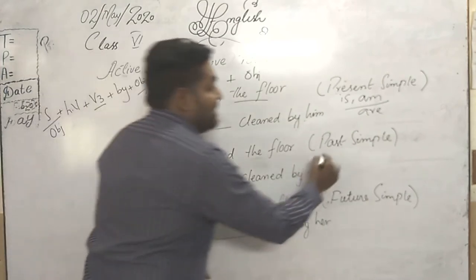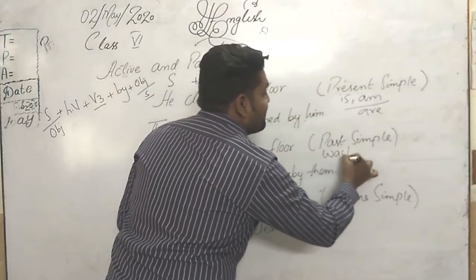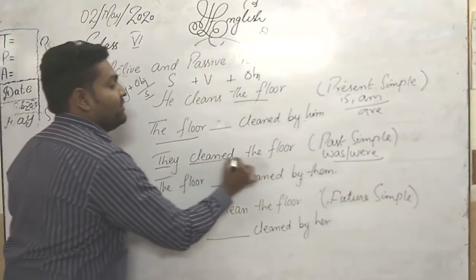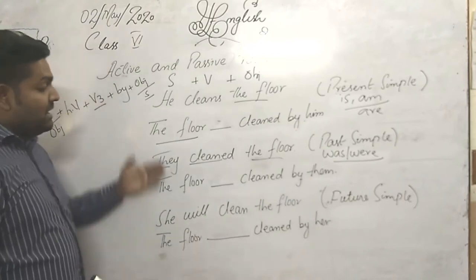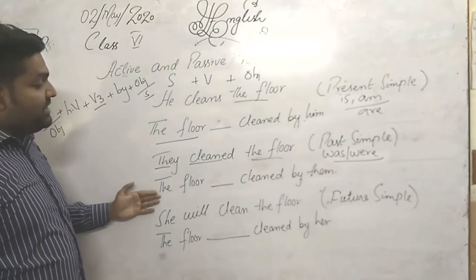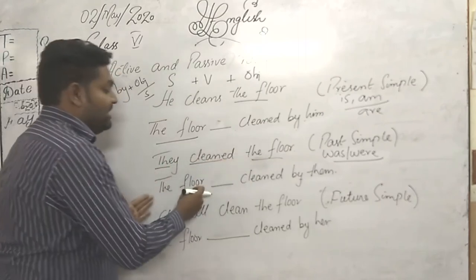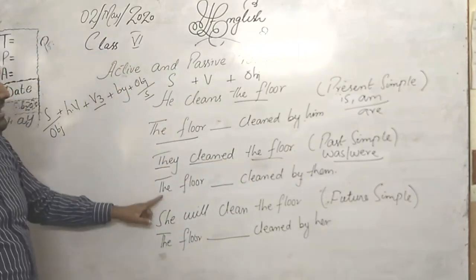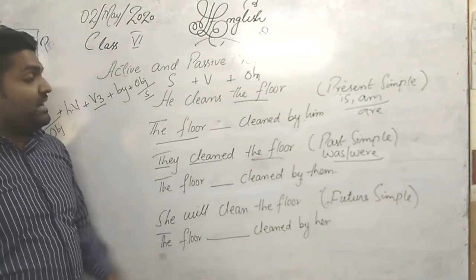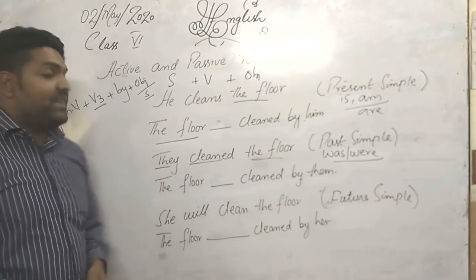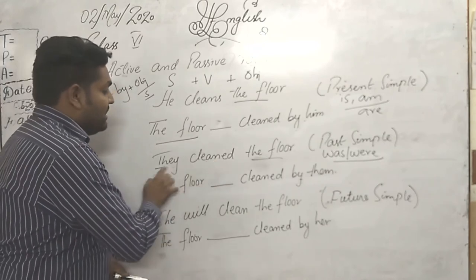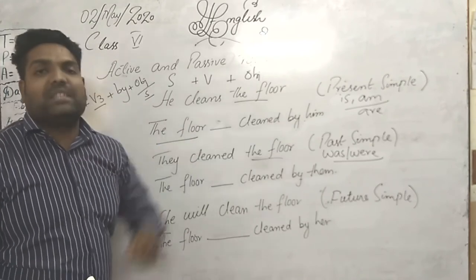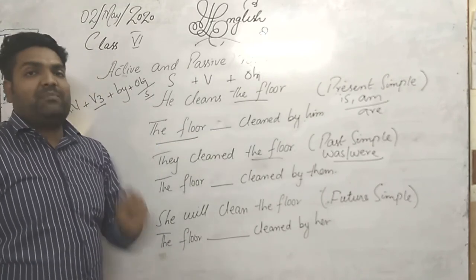Second, we have past simple. The helping verbs for past simple are was and were. The structure is the same — subject, verb, and object. The subject becomes object and object becomes subject. Now 'the floor' becomes the subject. You have to write the correct helping verb: 'the floor was clean' or 'the floor were clean.' We are not going to change the meaning of the sentence, only the helping verb.